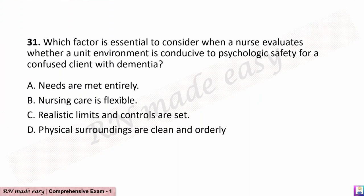Question 31. Which factor is essential to consider when a nurse evaluates whether a unit environment is conducive to psychological safety for a confused client with dementia? A. Needs are met entirely. B. Nursing care is flexible. C. Realistic limits and controls are set. D. Physical surroundings are clean and orderly.